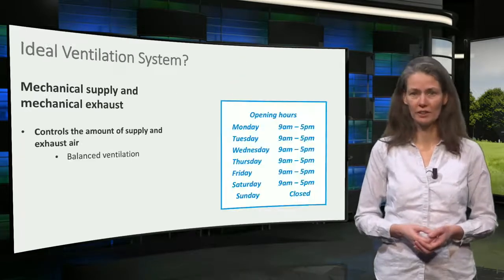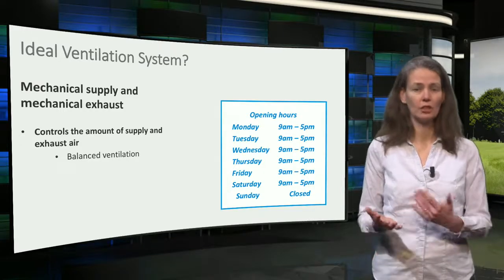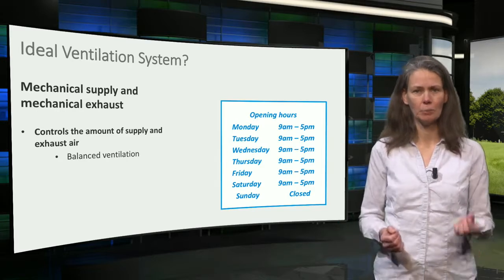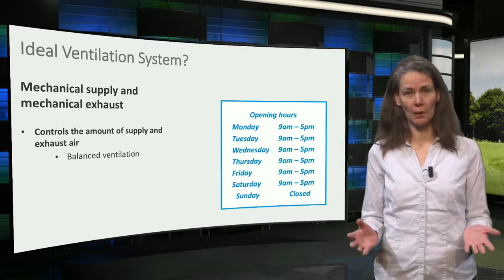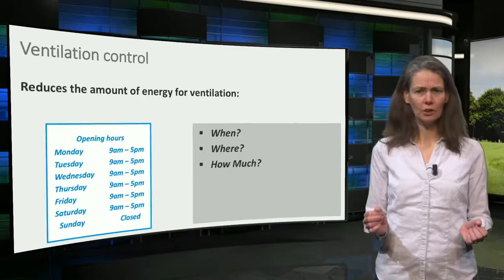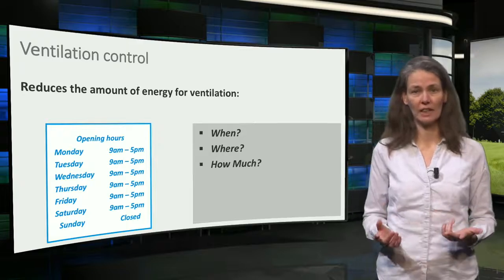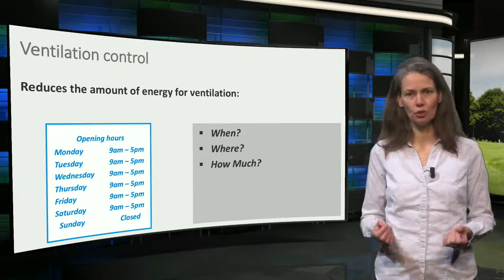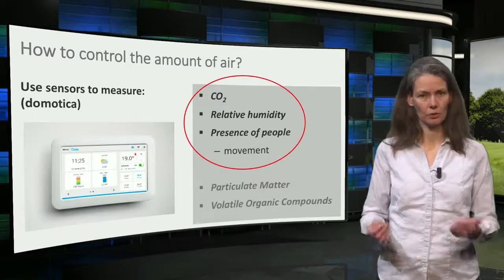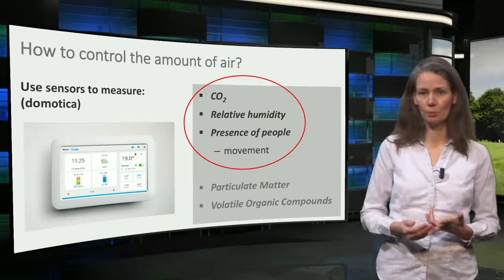Have we now found the ideal ventilation system? The mechanical supply and mechanical exhaust system looks like the ideal system for an office during the day, but is this also true outside office hours when there are no people present? A clear understanding of when, where, and how much air is necessary for ventilation is the key to reducing energy for ventilation. The amount of ventilation depends on the amount of people, the amount of harmful sources, and the relative humidity in the room.